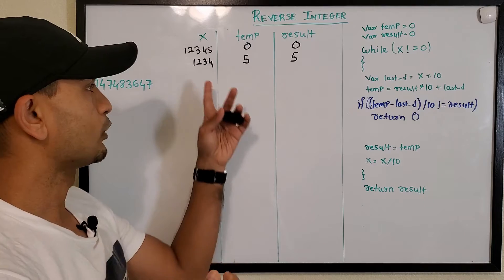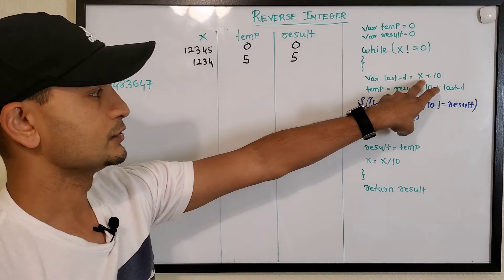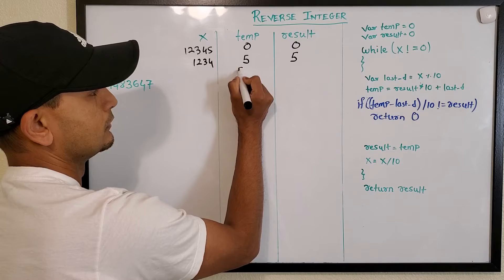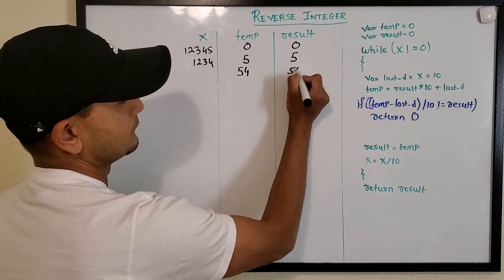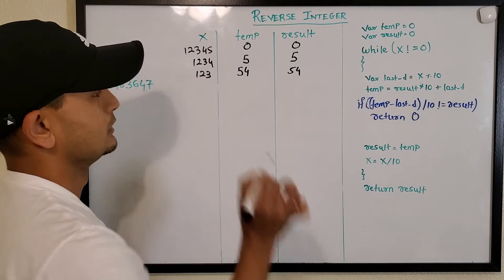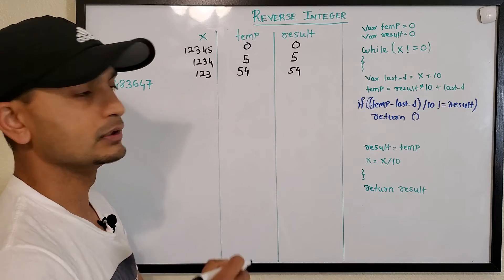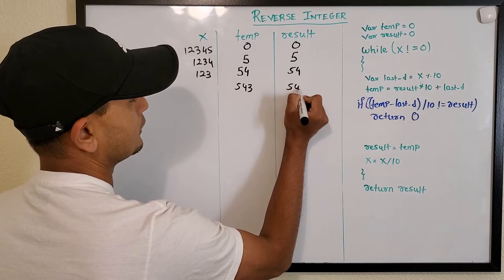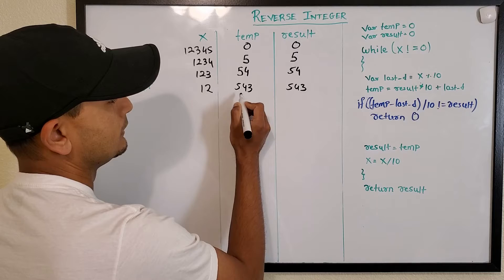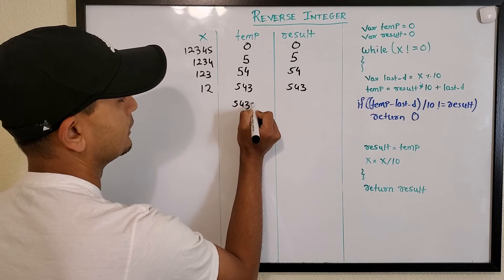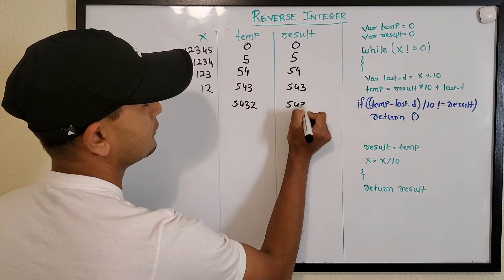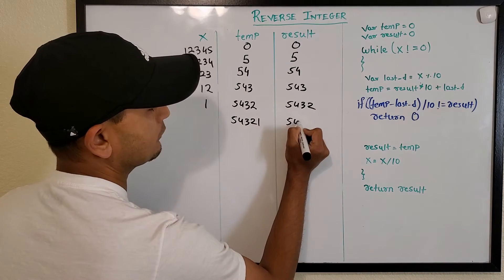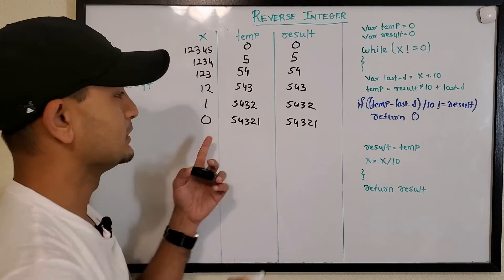We repeat the process: take the last digit, which is now 4, compute result times 10 plus last digit to get 54, copy it to result, and divide x by 10. We keep doing this — result builds up as 543, 5432, and eventually 54321 with x becoming 0, at which point we exit the loop and return result.